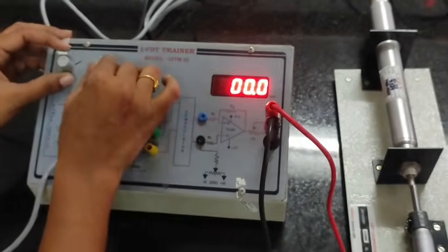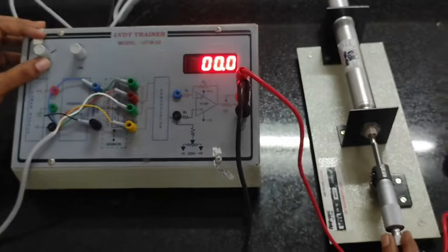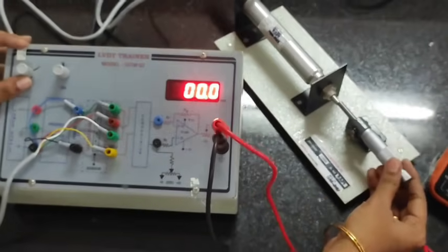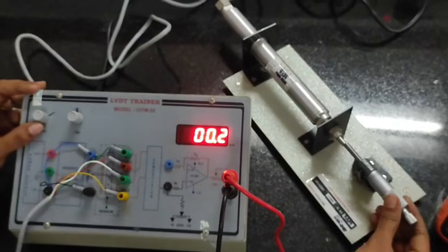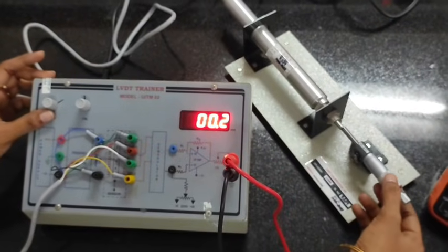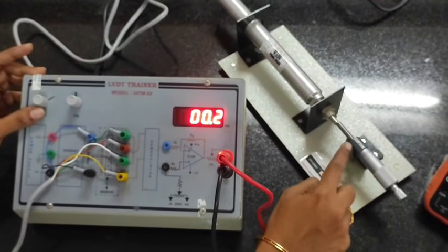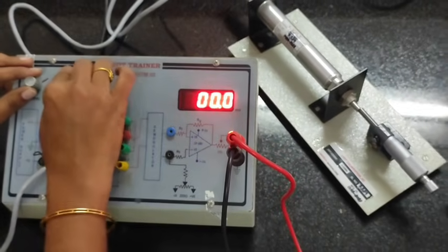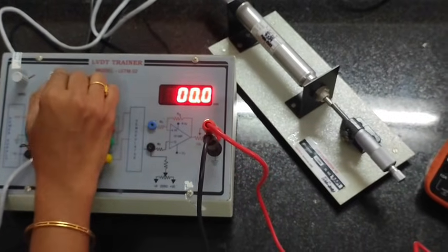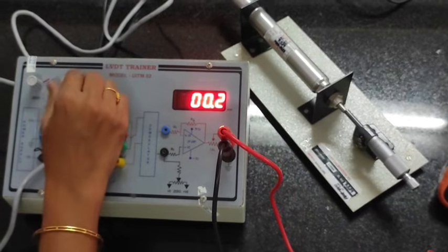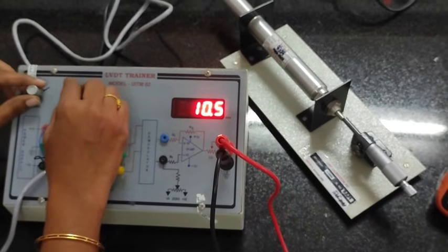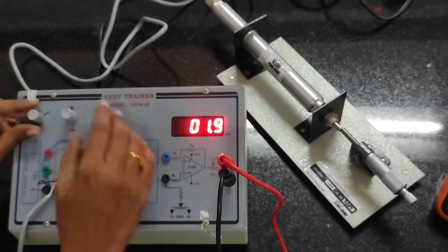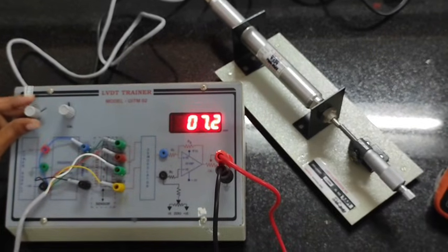Next step is calibration. There are span adjustment and zero adjustment. In the screw cage, we are keeping the center position as 10. There are inner side scale readings in this screw cage. By making this span adjustment and zero adjustment, we are making zero for the position 10. We have to make zero for 10.